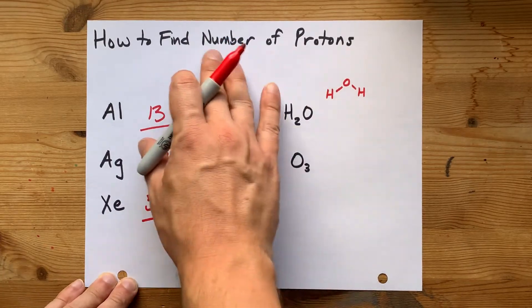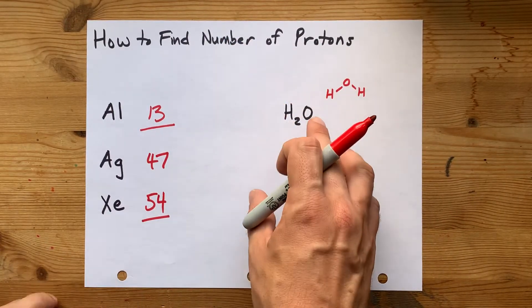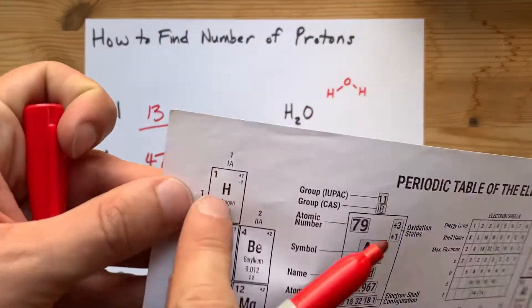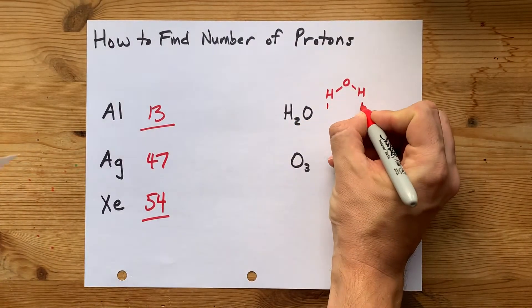Now, if your teacher's asking you the number of protons in this molecule, you're going to have to figure out how many there are in each of these elements. Each of the hydrogens is one. So that's a one here and a one here.